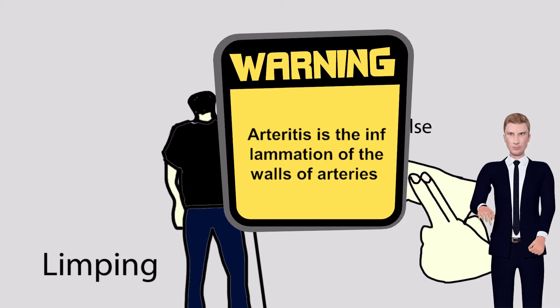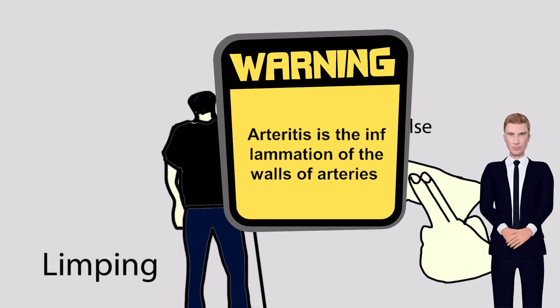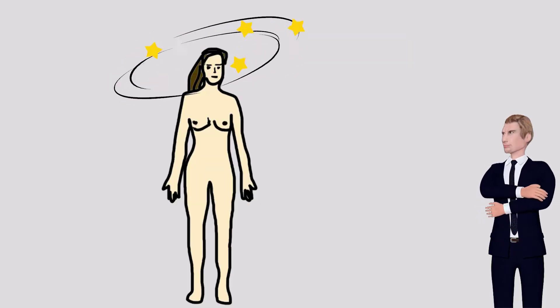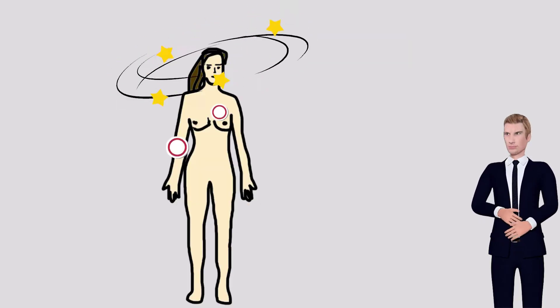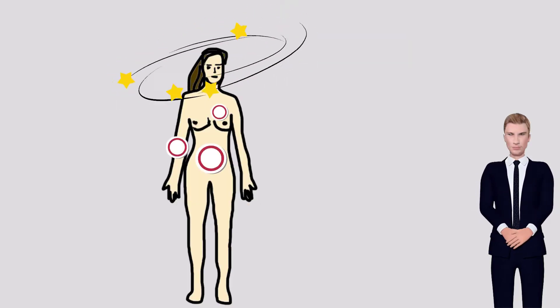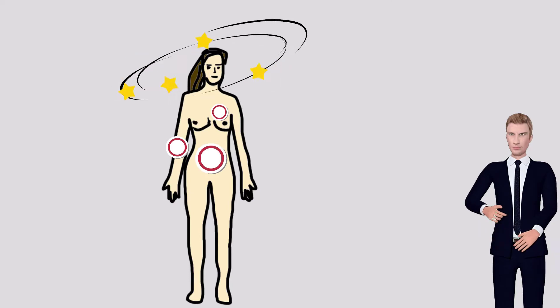Arteritis is the inflammation of the walls of arteries, usually as a result of infection or autoimmune response. Arteritis may occur in different parts of the body and in different types.